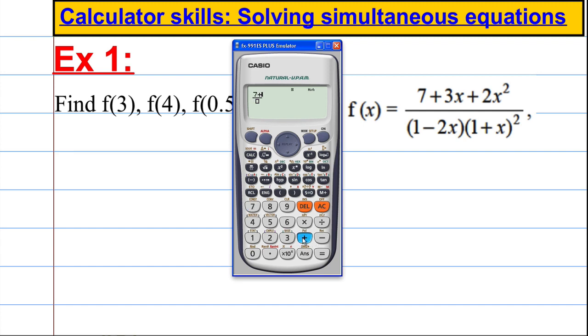Now I want to write 3x, so 7 plus 3, and you can press alpha-X. That gives you an X. Plus 2, alpha-X squared. And now we've copied the top. Press the down arrow.